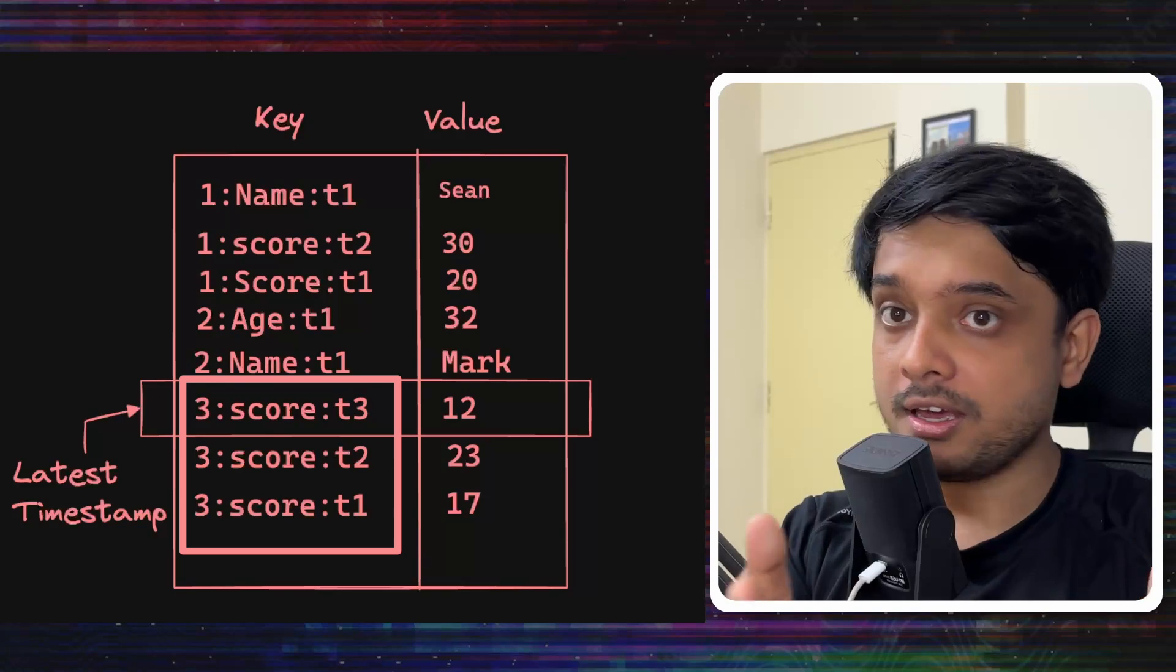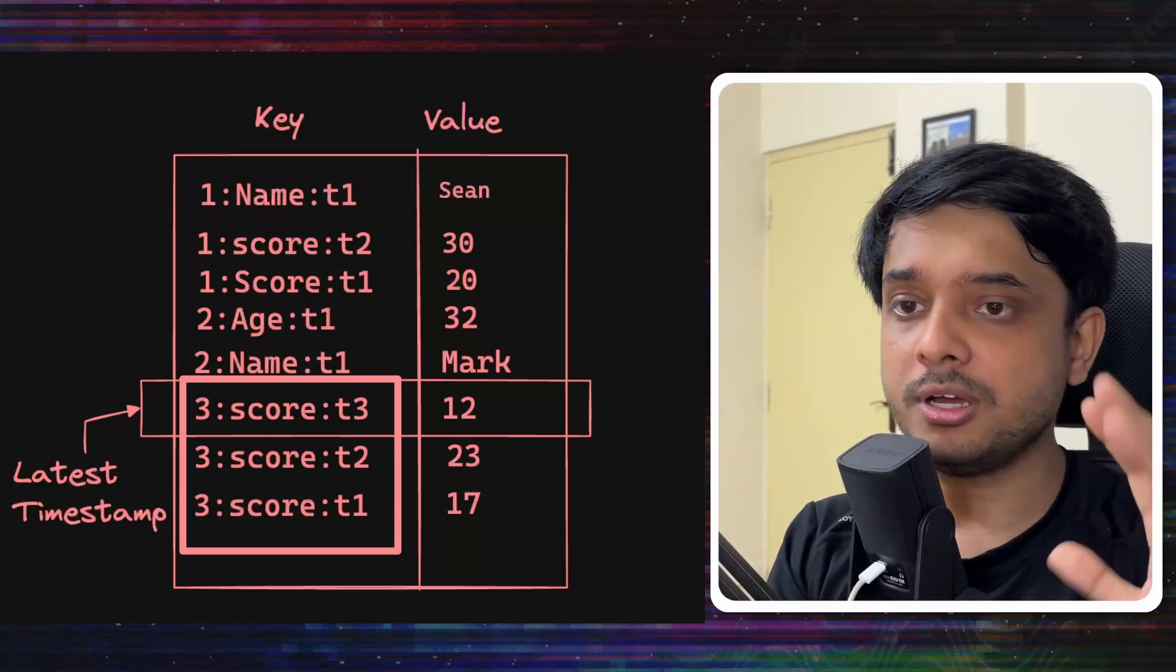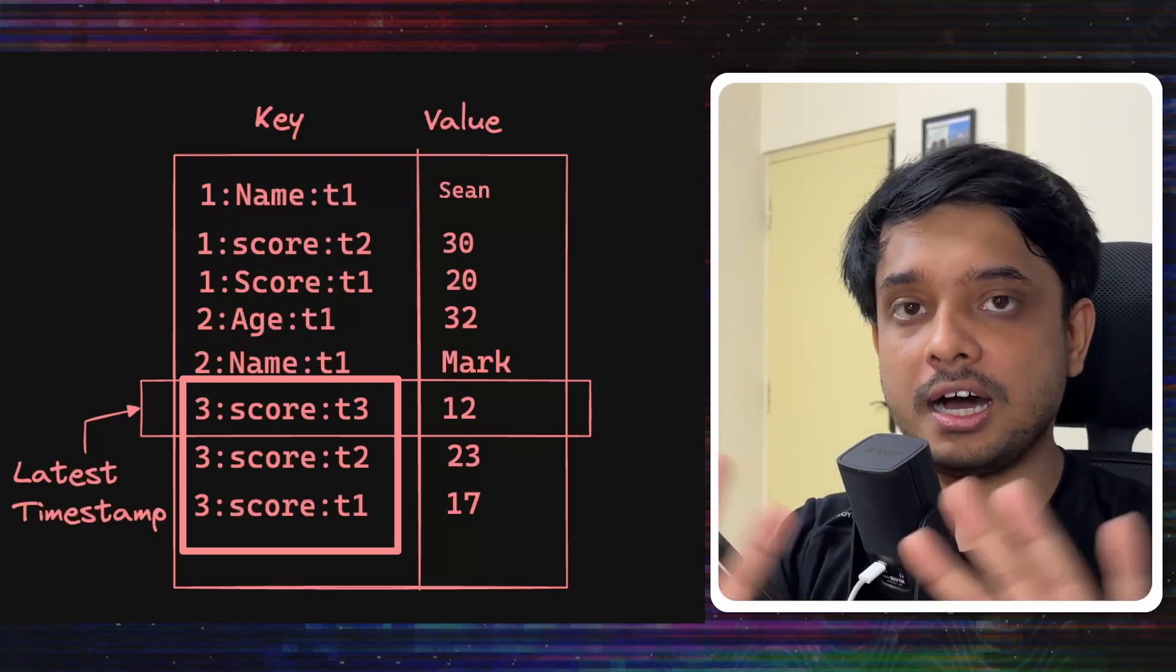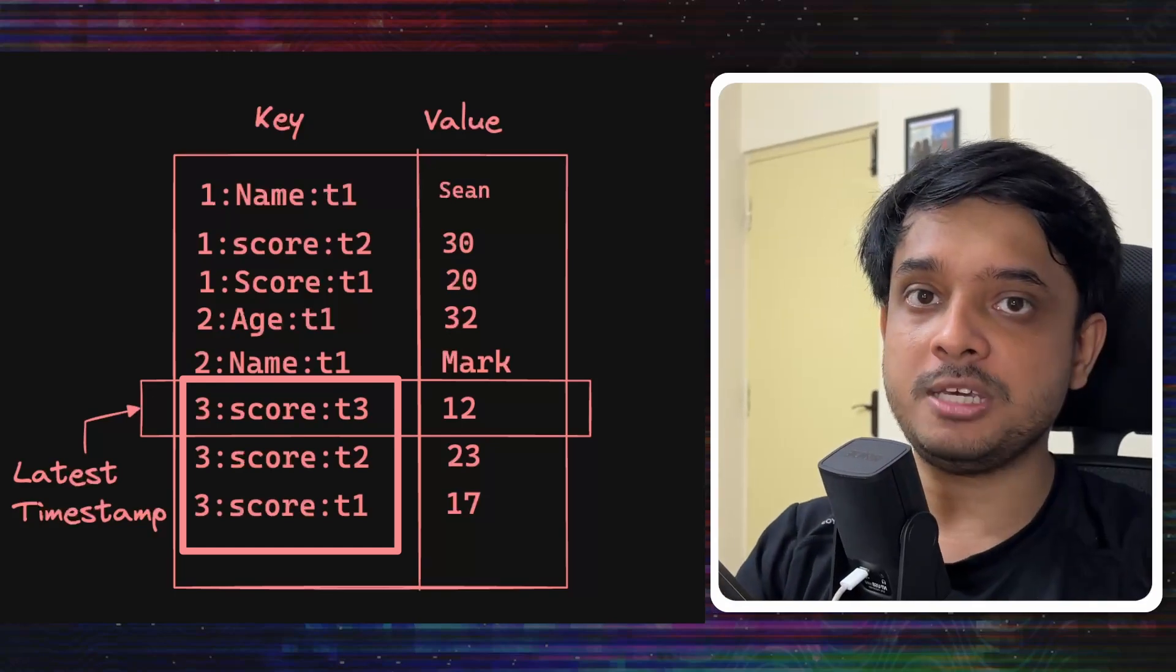So considering everything is the same except the timestamp, the keys would be in descending order. Otherwise, it will always be in ascending order.